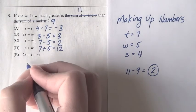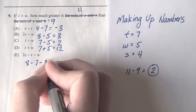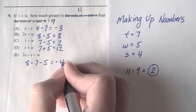And finally, 2s, or 8, minus t, minus w. So, that's 8 minus 7, or 1, minus 5, is negative 4.